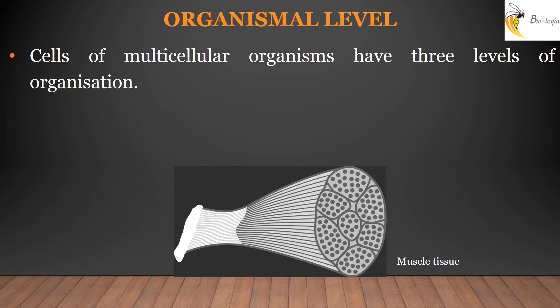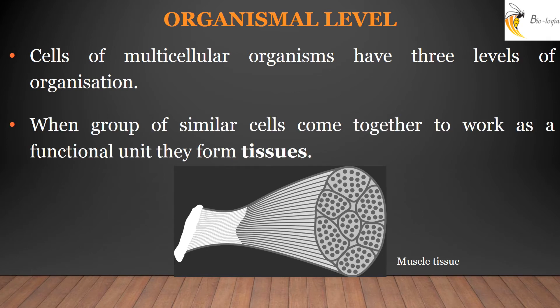Multicellular organisms exhibit three levels of increasing complexity. When similar-looking cells come together as a group to perform a common function, they form tissues. For example, muscle tissue.